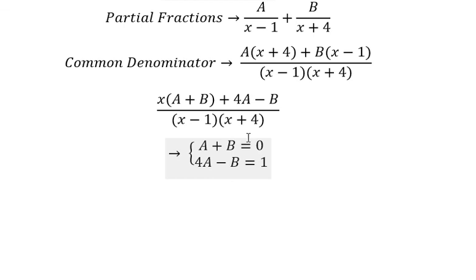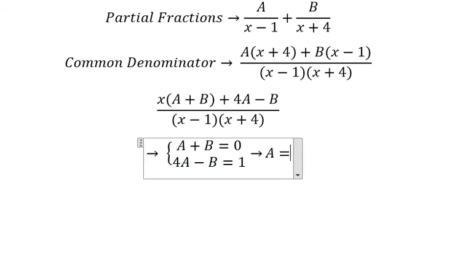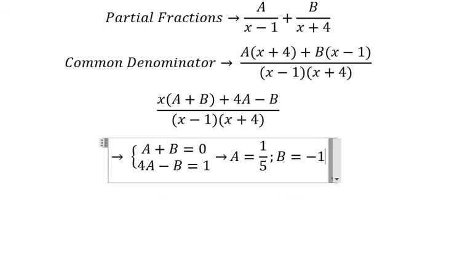So we solve these equations and we get the value of A and B. We get A equals 1 over 5, and B equals negative 1 over 5.